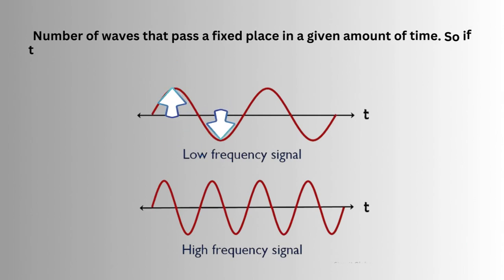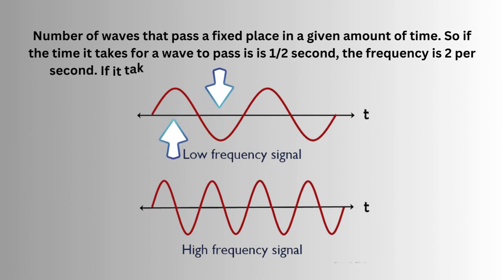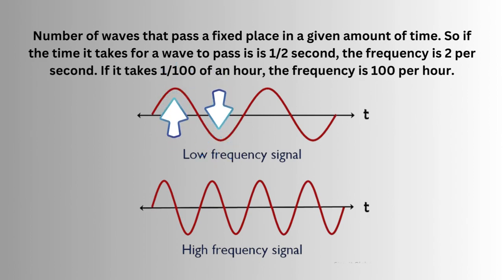What is frequency? Number of waves that pass a fixed place in a given amount of time. So if the time it takes for a wave to pass is half a second, the frequency is two per second. If it takes 1/100 of an hour, the frequency is 100 per hour.